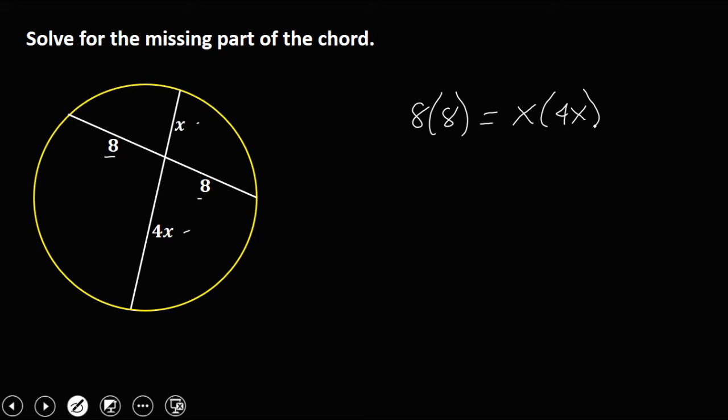Then simplify to solve for X. So this one is 64, and that's 4X squared.